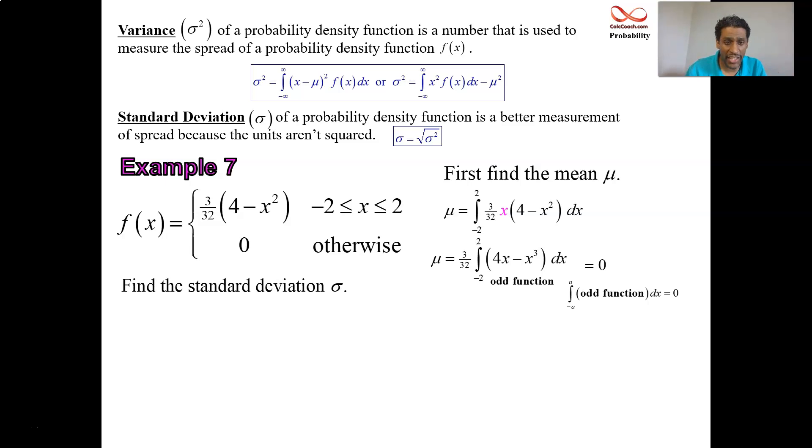To get the standard deviation, I'm going to use the second formula. So I'm going to integrate x² times f(x). Since the mean is zero, σ² equals that. Put out the 3/32. Put the x² in.